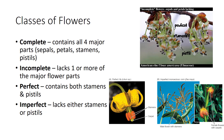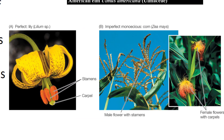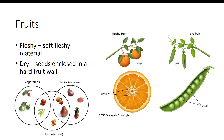The perfect flower contains both stamens and pistils. The imperfect flower lacks either stamens or pistils — an example of a plant containing this type of flower is corn. Fruits are formed after the flower has been pollinated and fertilized. The definition of a fruit is a mature ovary of a flowering plant. There are two types of fruits. The fleshy fruit, such as a tomato, has soft fleshy material with or without seeds enclosed. The dry fruit, such as a sunflower, has seeds enclosed in a hard fruit wall.